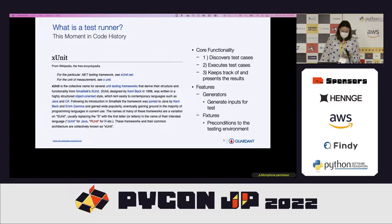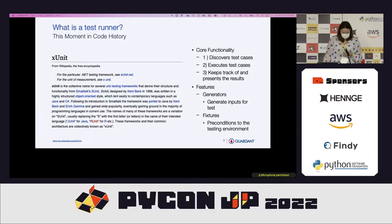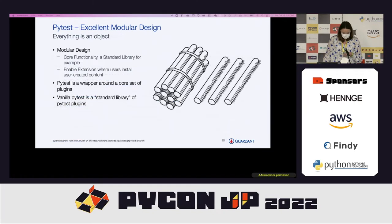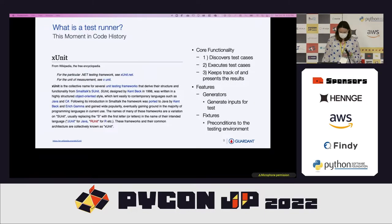Kent Beck created Smalltalk, which was an ancestor to all object-oriented programming languages. Smalltalk had a unit testing framework called SUnit, or Smalltalk Unit, and this is the origin of all of our unit testing frameworks. All these derivative products ended up being called XUnit type tests.